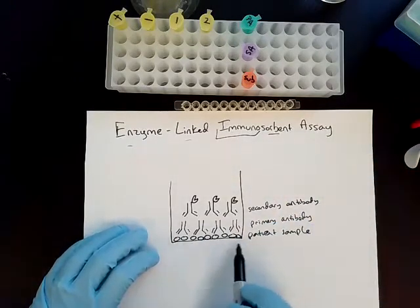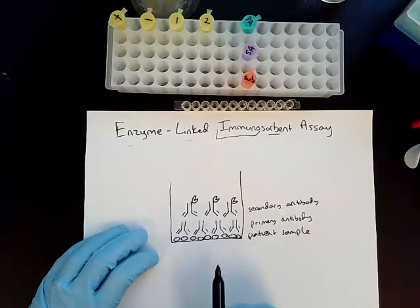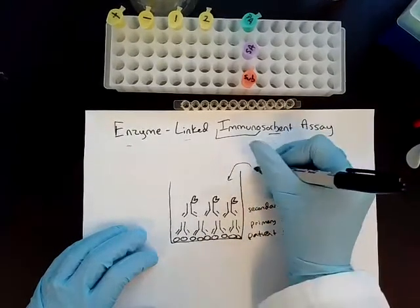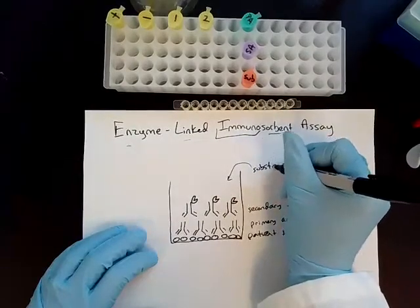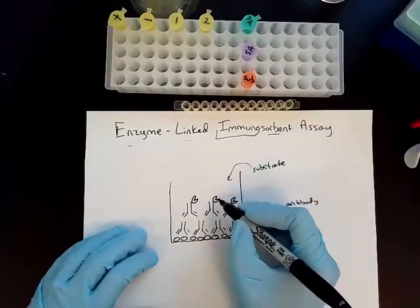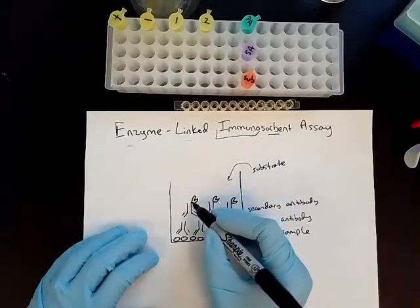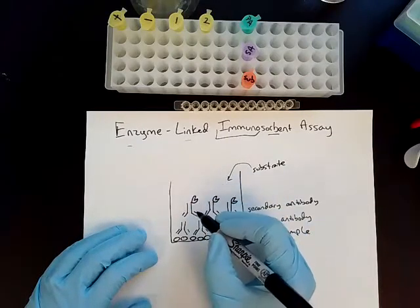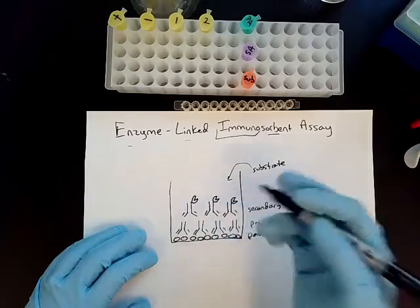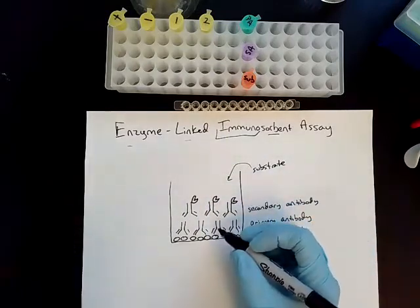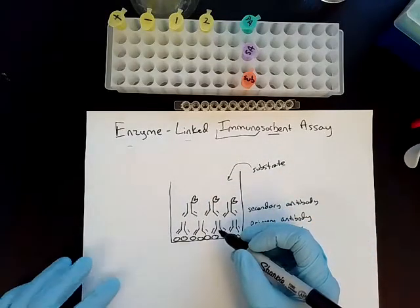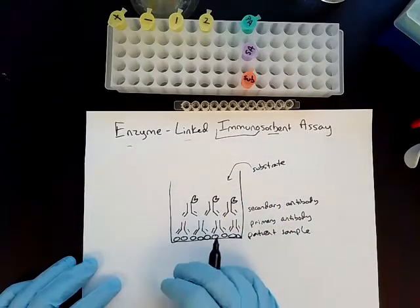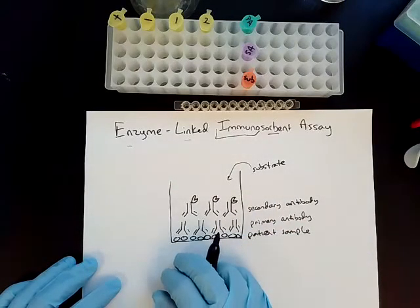So we've added the patient sample, the primary antibody, and the secondary antibody, and then we add in a substrate. When the substrate is added, if this enzyme is present, the enzyme will interact with the substrate and it will cause a color change. That's a visible sign that we do have that pathogen present in the sample if we see the color change.